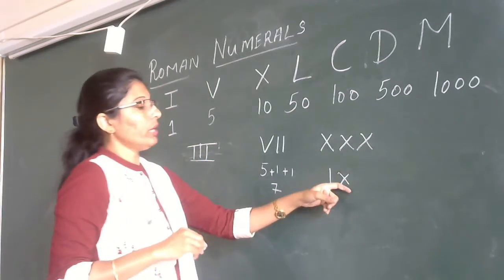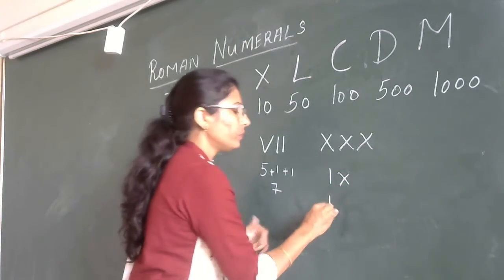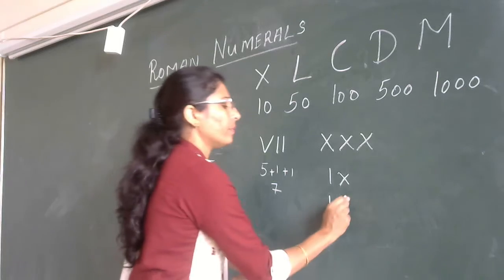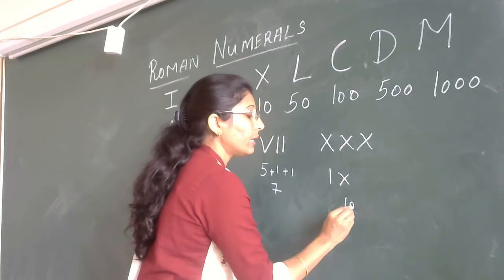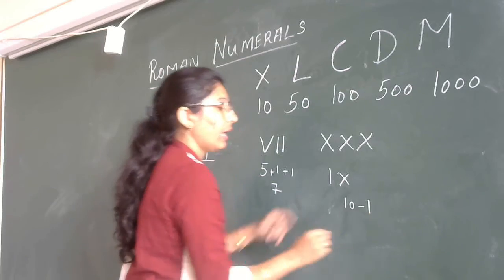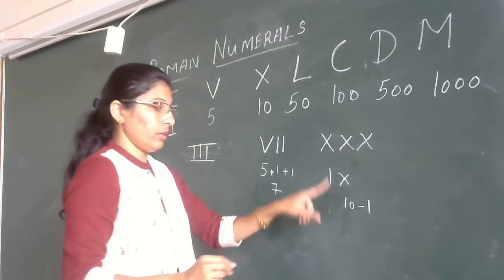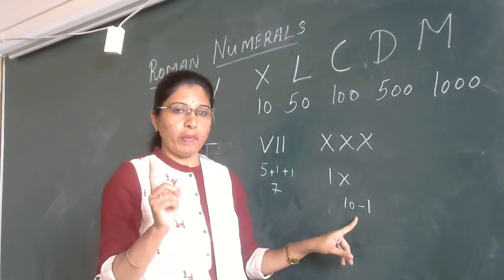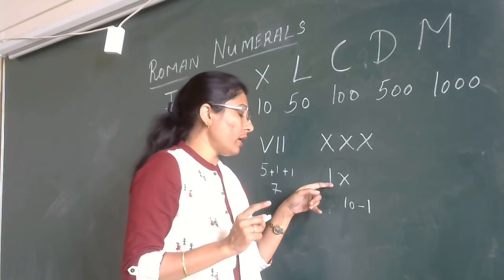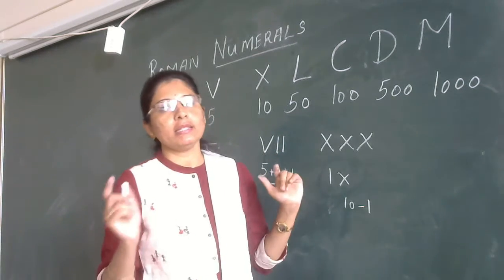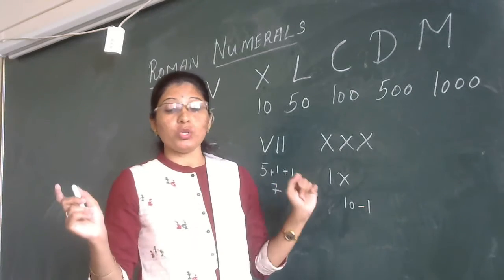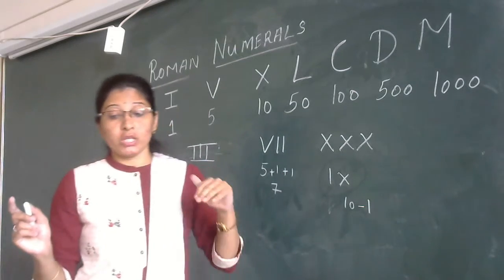When the smaller symbol is written to the left side, that means subtraction. For example, IX means 10 minus 1, which is 9. You have to remember, whenever smaller symbol is written to the left side, we have to subtract. These are the rules.